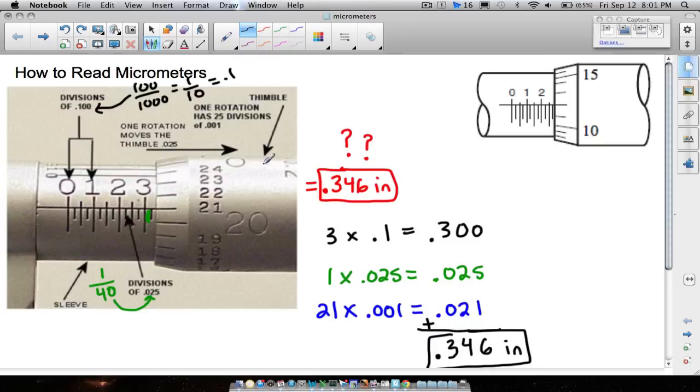Now there are micrometers out there that read even more accurate than that. They're called vernier micrometers, but for right now we're just going to focus on the micrometer that can do to the nearest thousandth. There are micrometers that can go even further, like one more decimal place to the nearest ten thousandth, but we're not going to worry about those for right now.